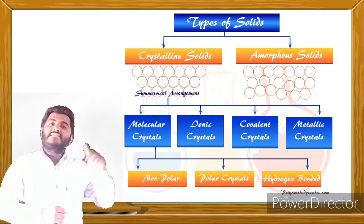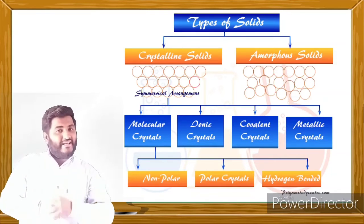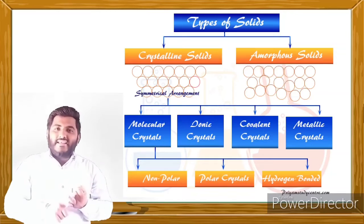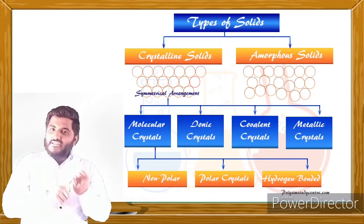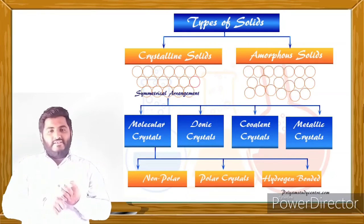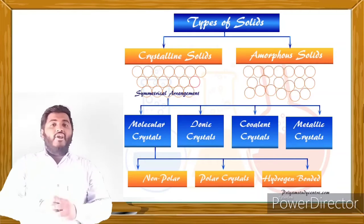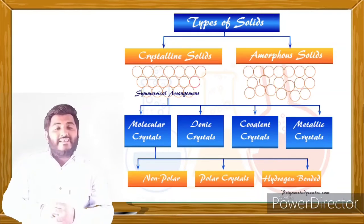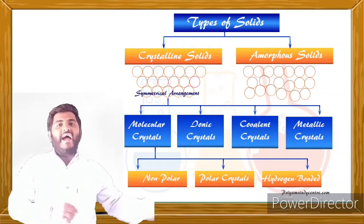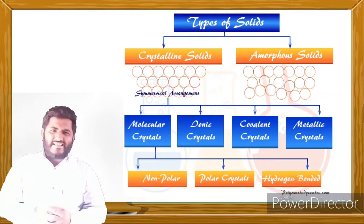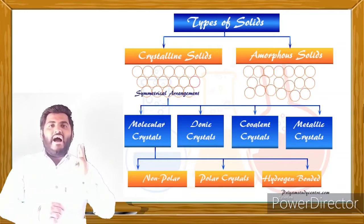In crystalline solids, there are further sub-categories. Crystalline solids are classified into four categories: ionic solids, metallic solids, covalent solids, and molecular solids. Molecular solids are again classified into three types: polar, non-polar, and hydrogen-bonded solids.